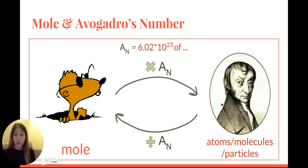Avogadro's number is 6.02 times 10 to the 23. It has the symbol of A with a subscript N.